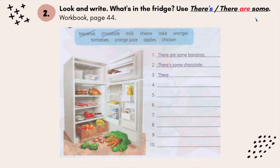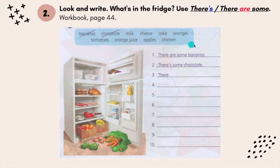You have to choose whether it is appropriate to use 'there's some' or 'there are some'. The list of things are here in the blue box. The words are: bananas, chocolate, milk, cheese, cake, oranges, tomatoes, orange juice, apples, and chicken.